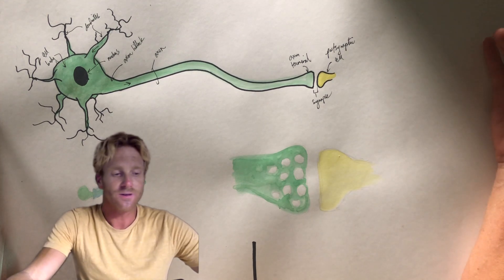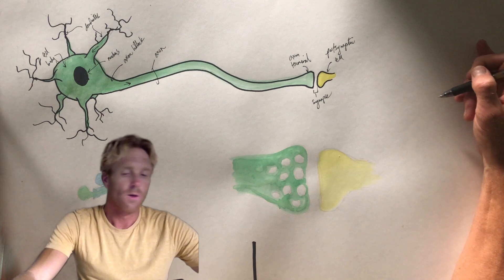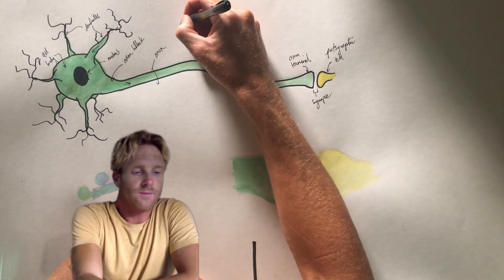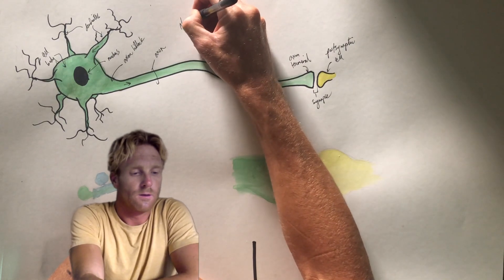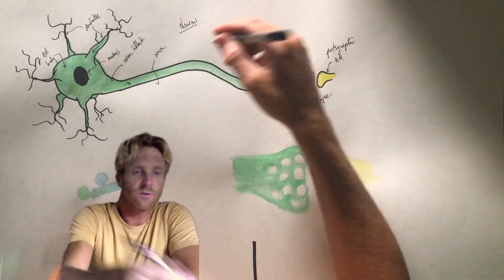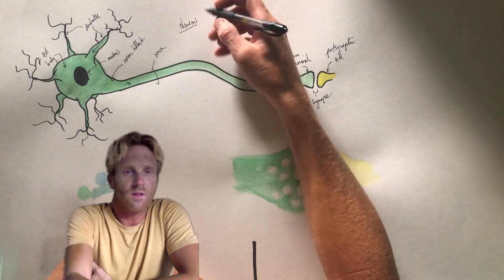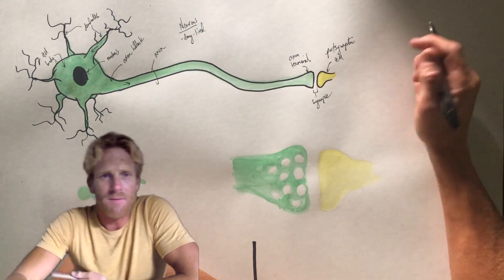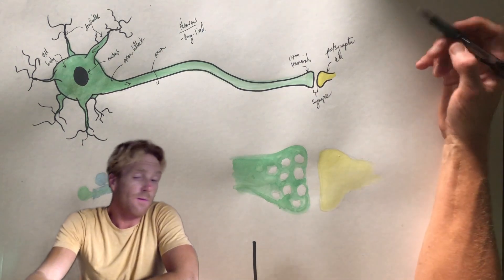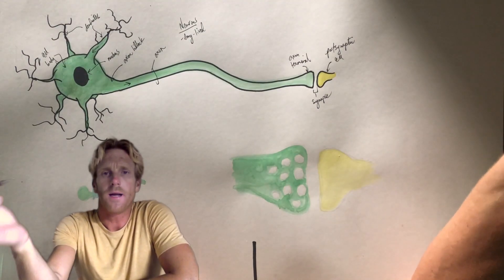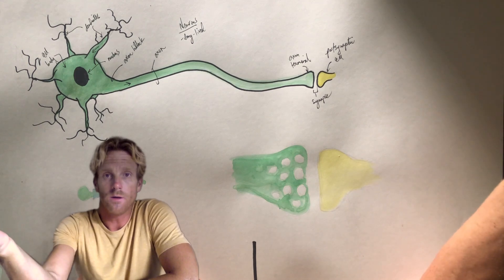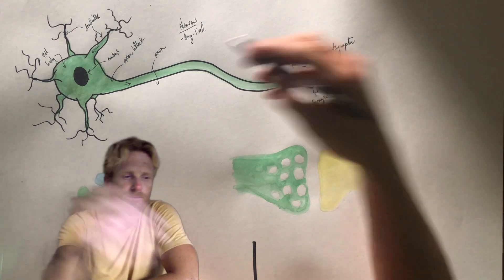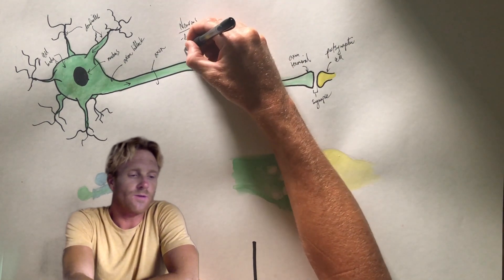There are a couple of important characteristics of neurons. The first characteristic is that neurons are very long-lived, meaning they live a long time. In fact, many of your neurons are going to live as long as you do — if you're 80 years old, your neurons that are still alive are all 80 years old.